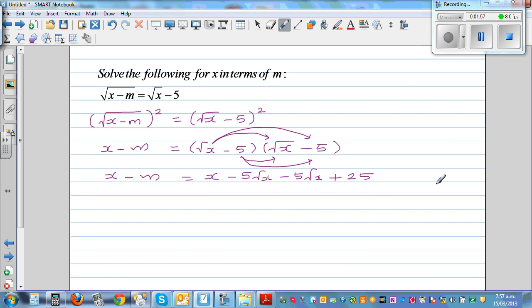This is where the major mistake happens. If you write x² - 25 or x² + 25, it is wrong. So this is x - m = x - 10√x + 25.